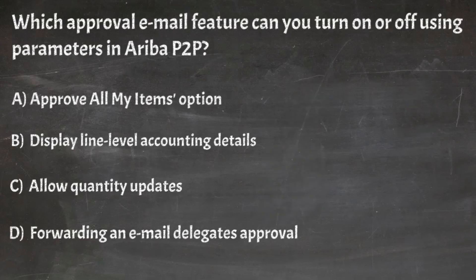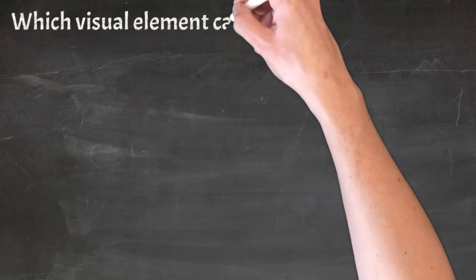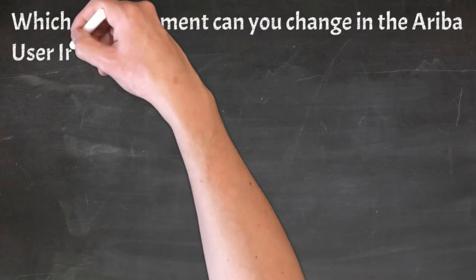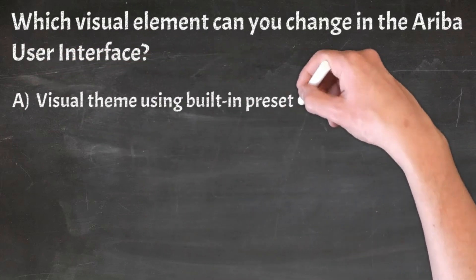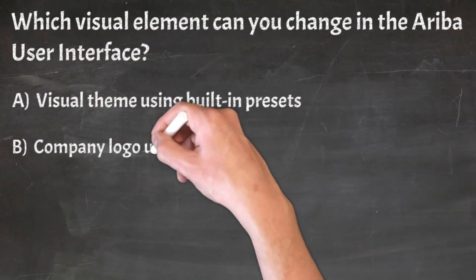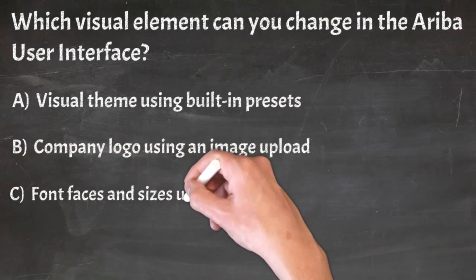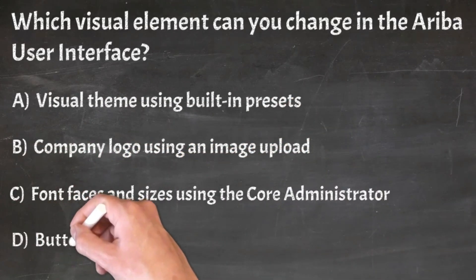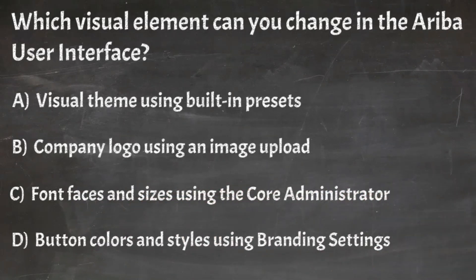Correct answer: A. Approve All My Items option. Question 2: Which visual element can you change in the Ariba user interface? A. Visual theme using built-in presets, B. Company logo using an image upload, C. Font faces and sizes using the Core Administrator, D. Button colors and styles using branding settings.